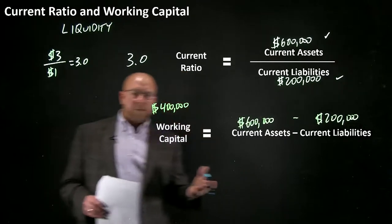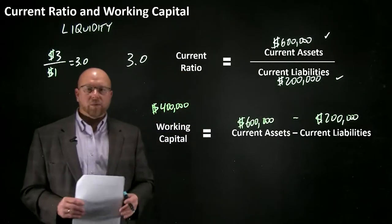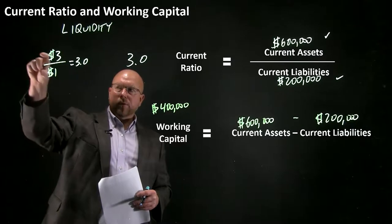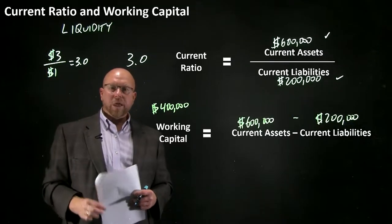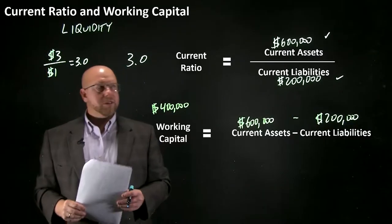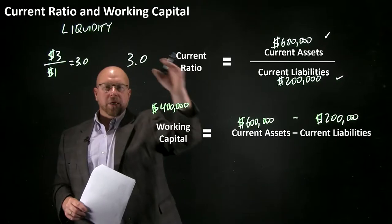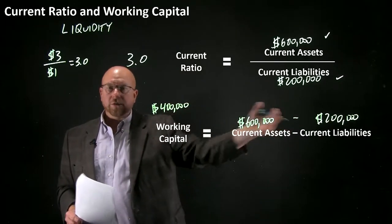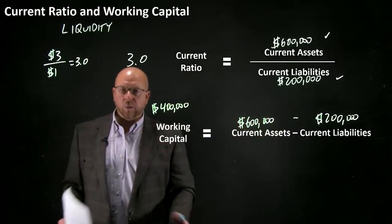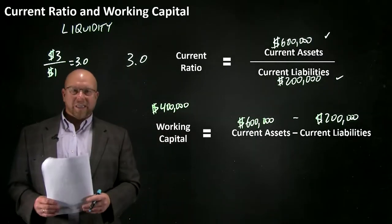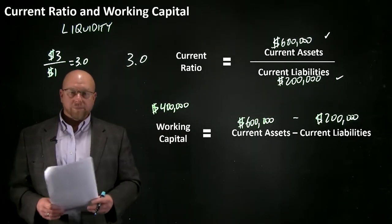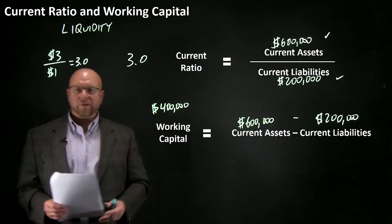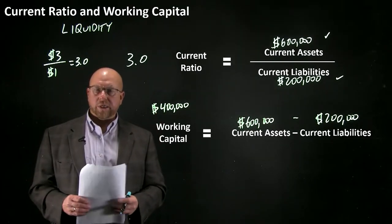Which situation would you prefer? A current ratio of 3.0 with working capital of $2? Or would you rather see a current ratio of 3.0 and working capital of $400,000? You can tell which of these situations is safer, which is more comfortable. And you can start to see how we can use either one of these metrics to analyze the company's liquidity.